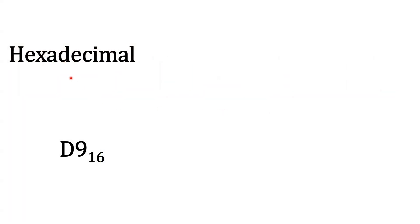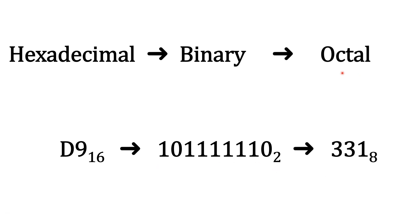We'll start with a hexadecimal number D9, and this is just one we chose as two digits. You could do this technique with any number of digits. The easiest way is to first convert it to binary and then convert the binary into an octal number. Let's start with this D9 in hexadecimal.